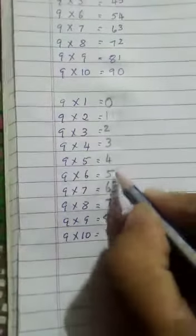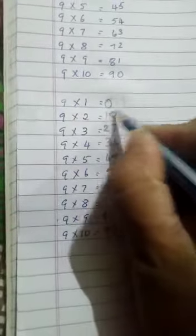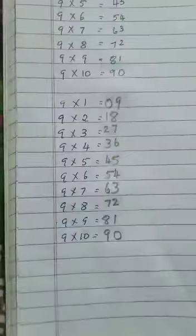Again, I am going to start the same series but from here, 0, 1, 2, 3, 4, 5, 6, 7, 8 and 9. Yes, here is the table of 9 is ready.